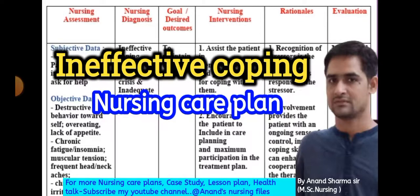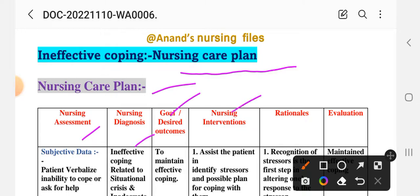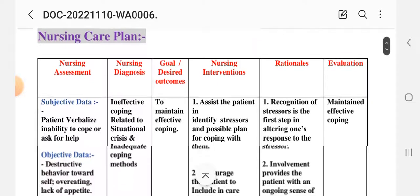Ineffective Coping and Nursing Care Plan. Here we have different nursing process steps: nursing assessment, diagnosis, goal, interventions, rationale, and evaluation. We use this care plan.